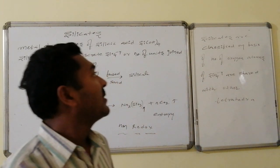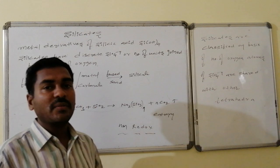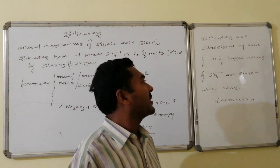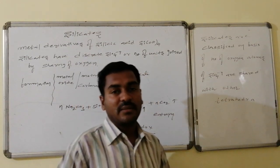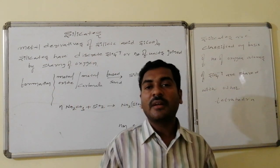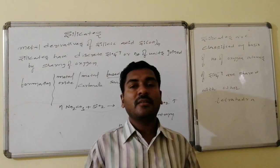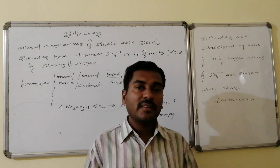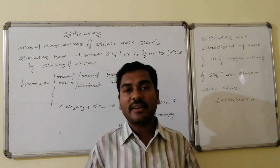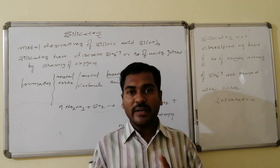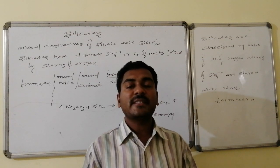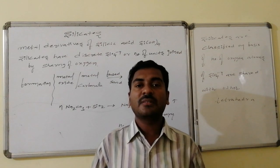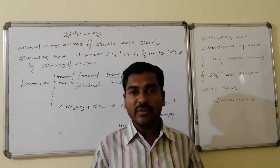Silicates can be classified on the basis of the number of oxygen atoms shared between individual SiO4 4- units. Based on that, there are different varieties of silicates. We will discuss in detail the names, examples belonging to each category, and how to derive the monomer unit as well as the molecular formula.